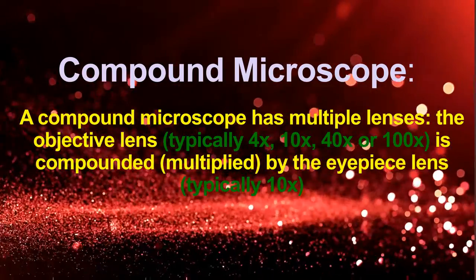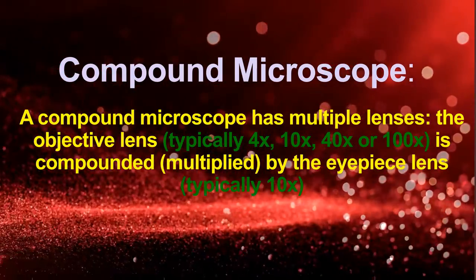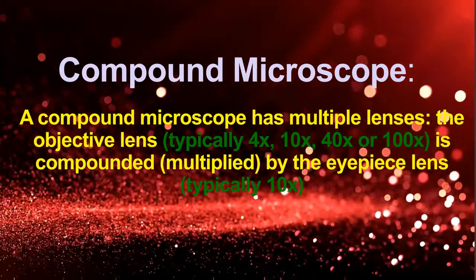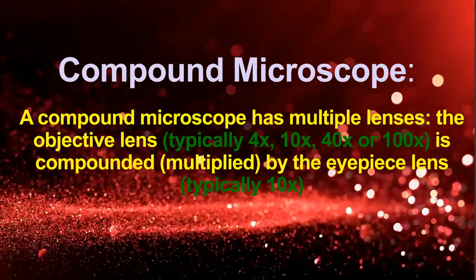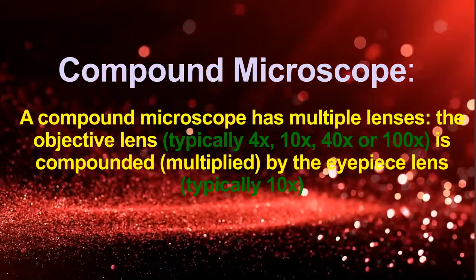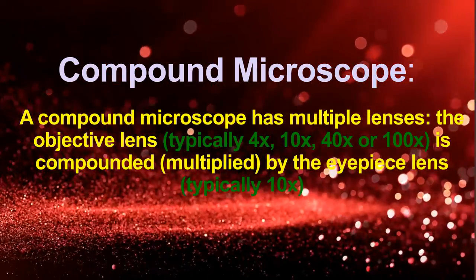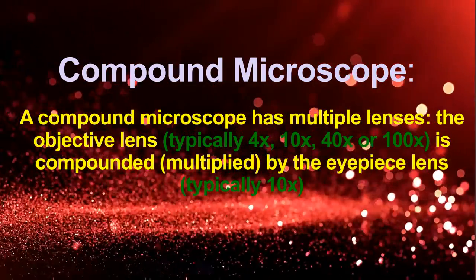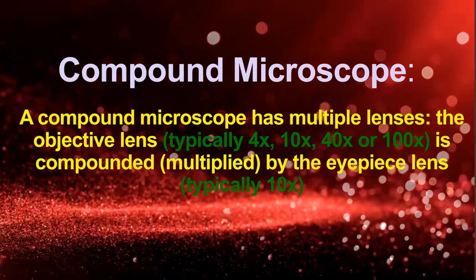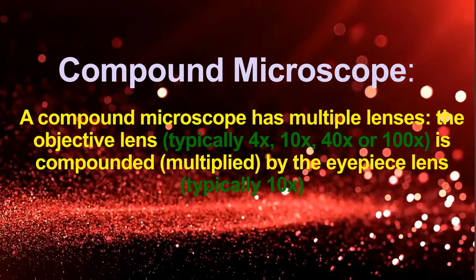The compound microscope has multiple lenses: the objective lens and the eyepiece lens. The objective lens typically comes in 4x, 10x, 40x, or 100x magnifications, and the eyepiece lens is typically 10x. The eyepiece lens is positioned near to the eye.